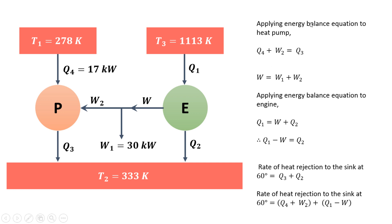Applying the energy balance equation to the heat pump: incoming arrows equal outgoing arrows. Q4 and W2 are incoming, Q3 is outgoing. Out of the total work developed by the heat engine, some part goes as W1 and the remaining as W2, so W = W1 + W2. This is a separate equation we will use.